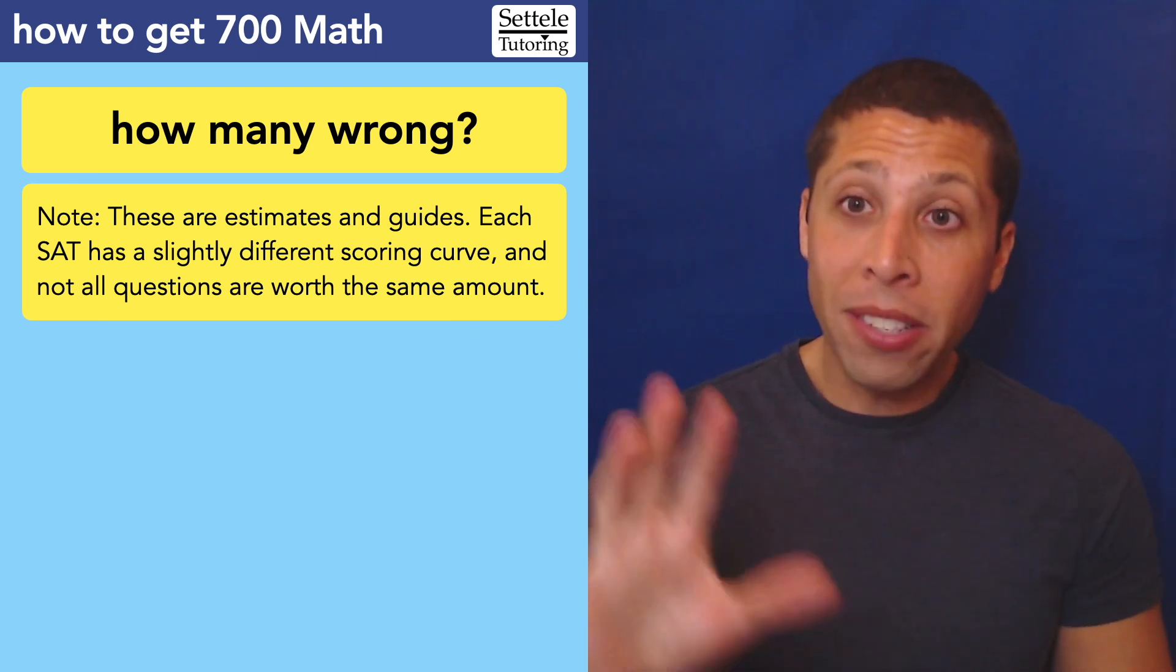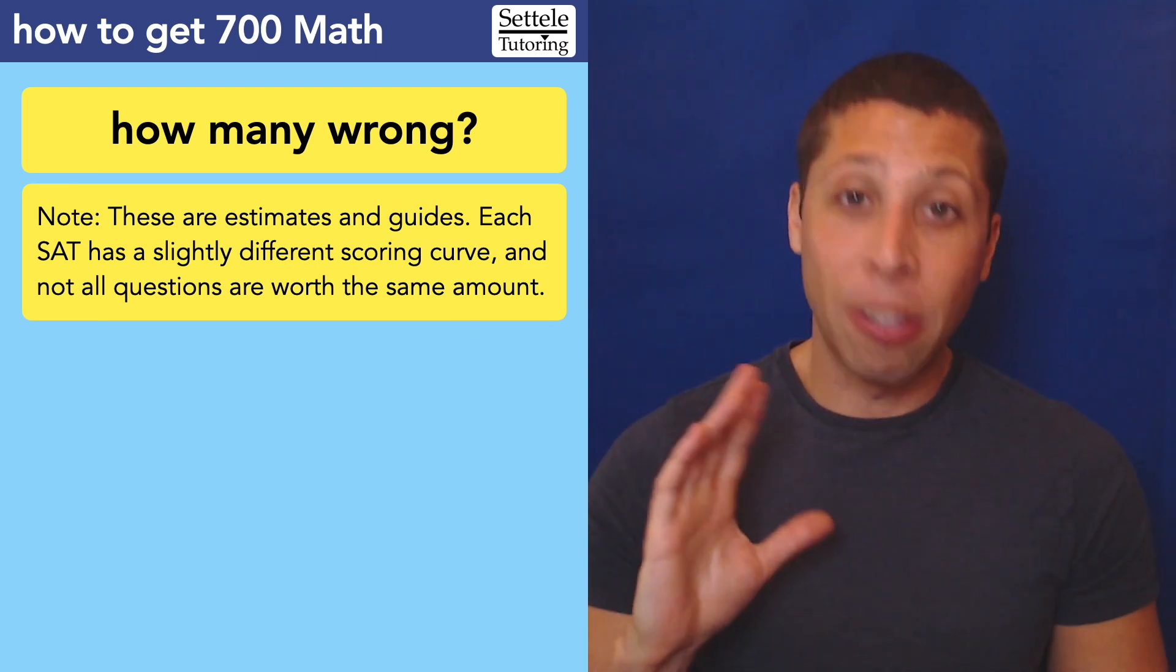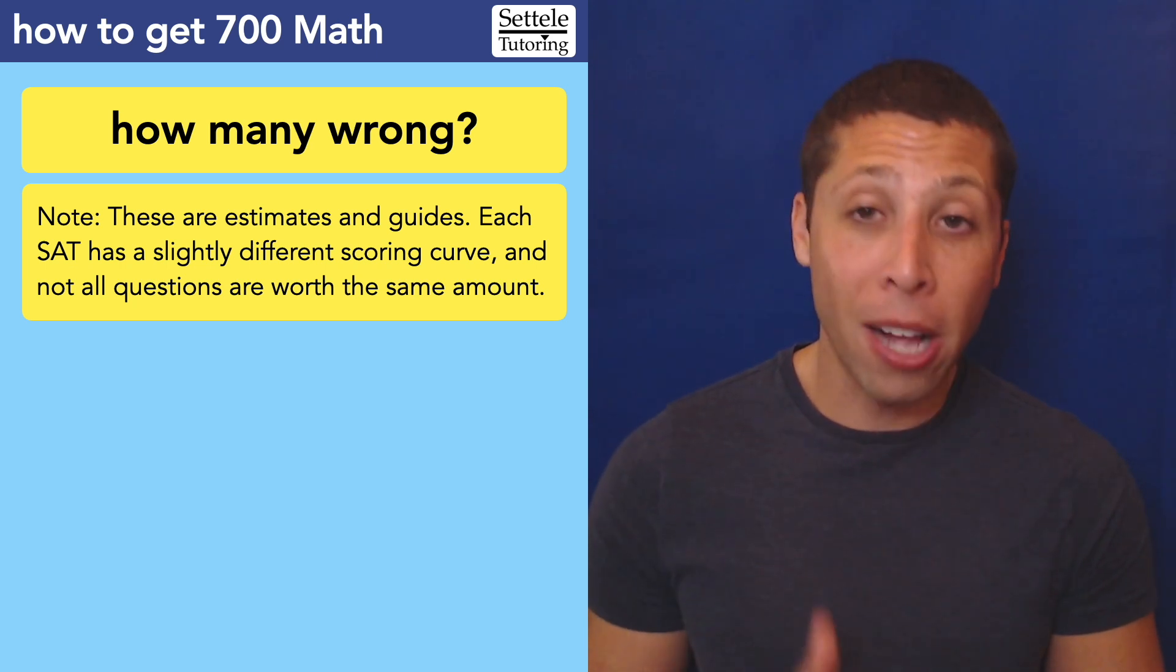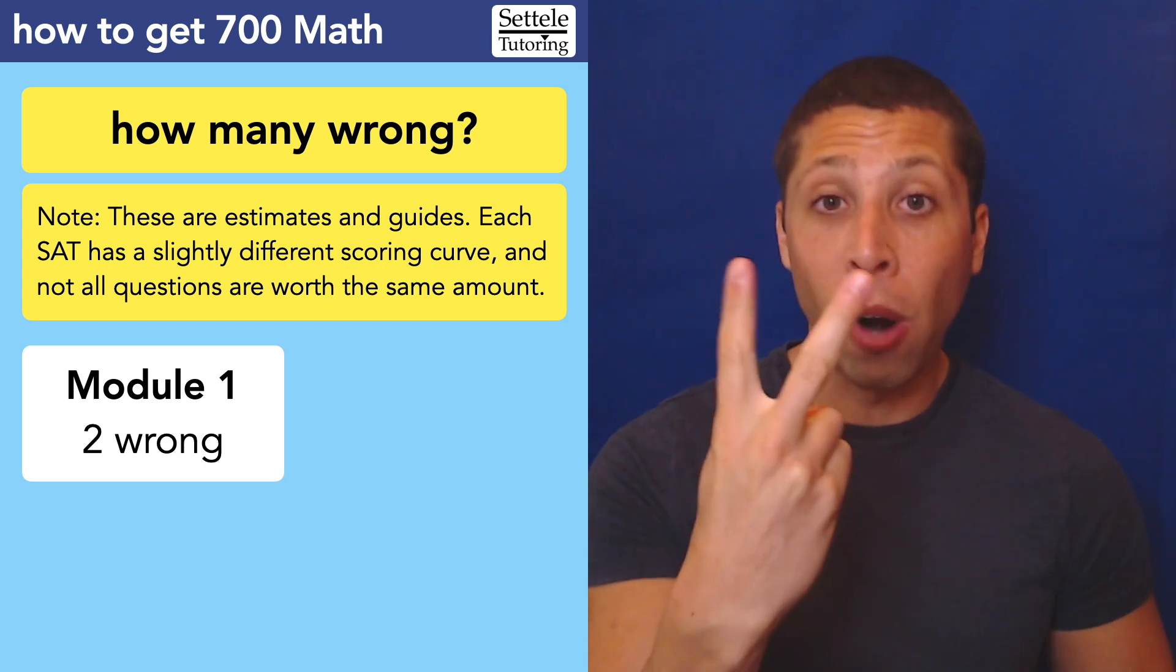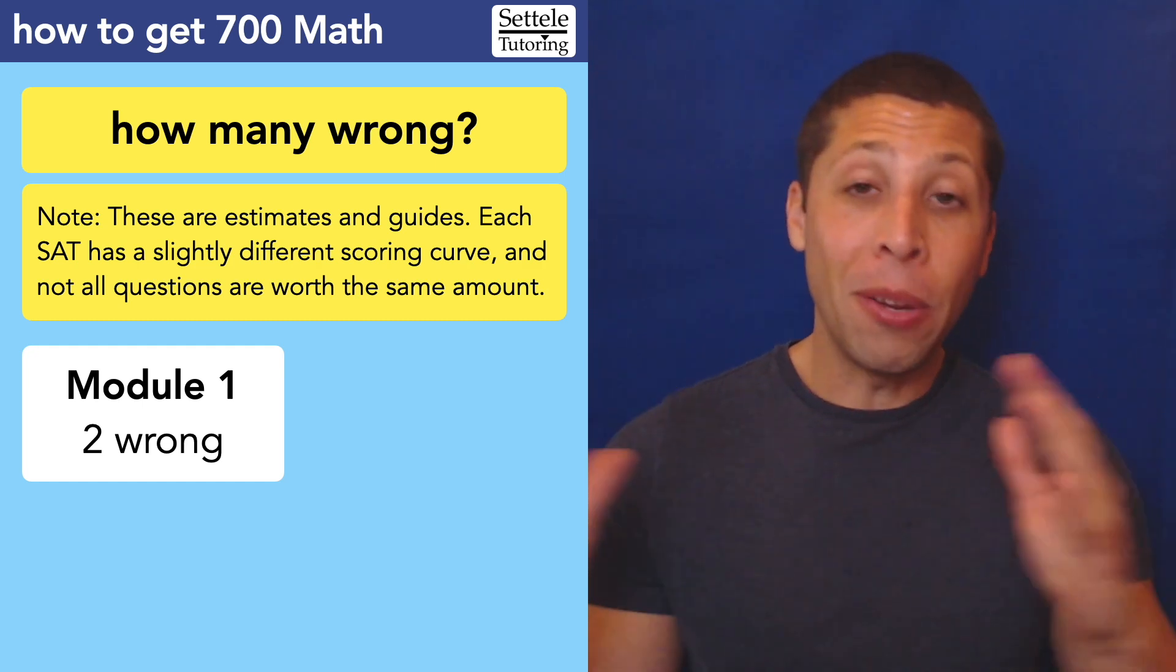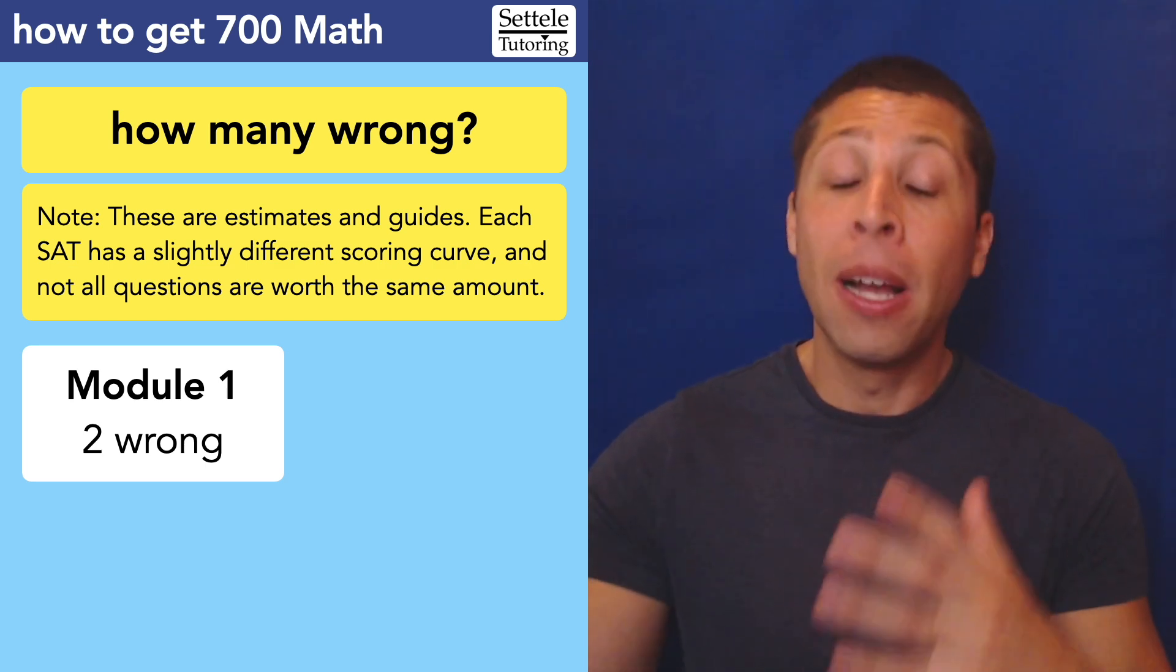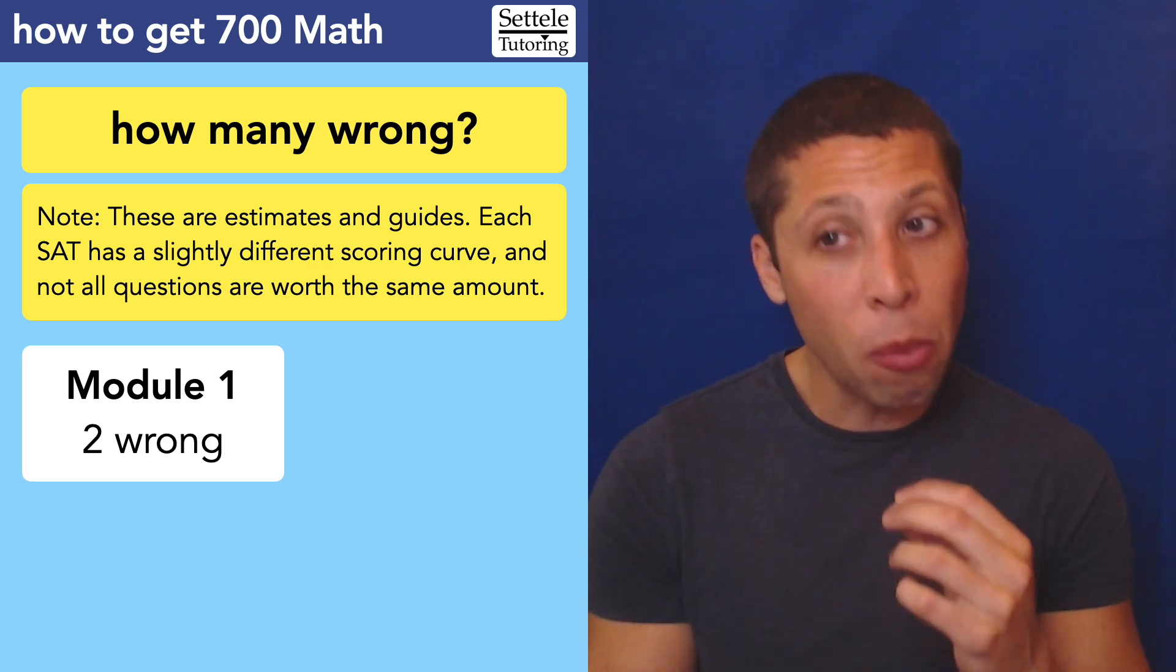Now, as always, this is just an estimate based on practice tests and experiments and things like that, but it's a pretty good estimate and a good goal to set for trying to get to a 700. On the way, we definitely want to make sure we are in the hard module. And so we want to keep the errors to a minimum in the first module. My advice is just two wrong. So remember, the math modules are organized by difficulty. So we really want those two to be near the end of the first module where we know we have the hard questions. Even the first module is going to have some hard ones, even though overall it's easier. So it's okay if we have some trouble with one or two of those. But really, if we can keep this to zero, that is the best case scenario.